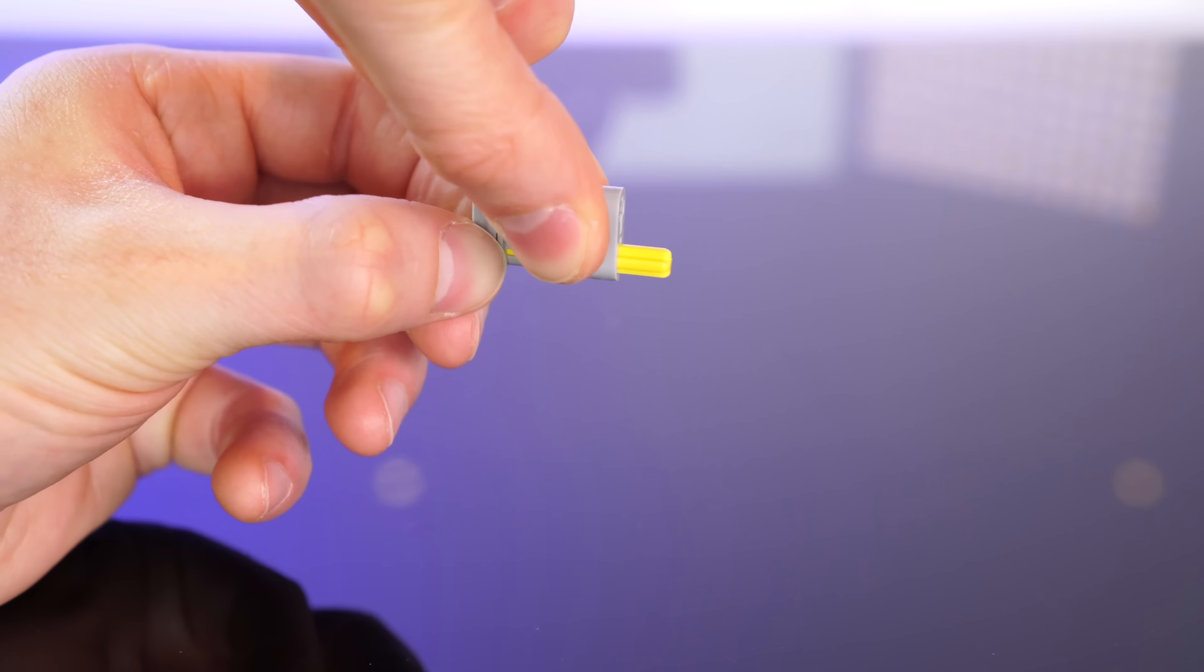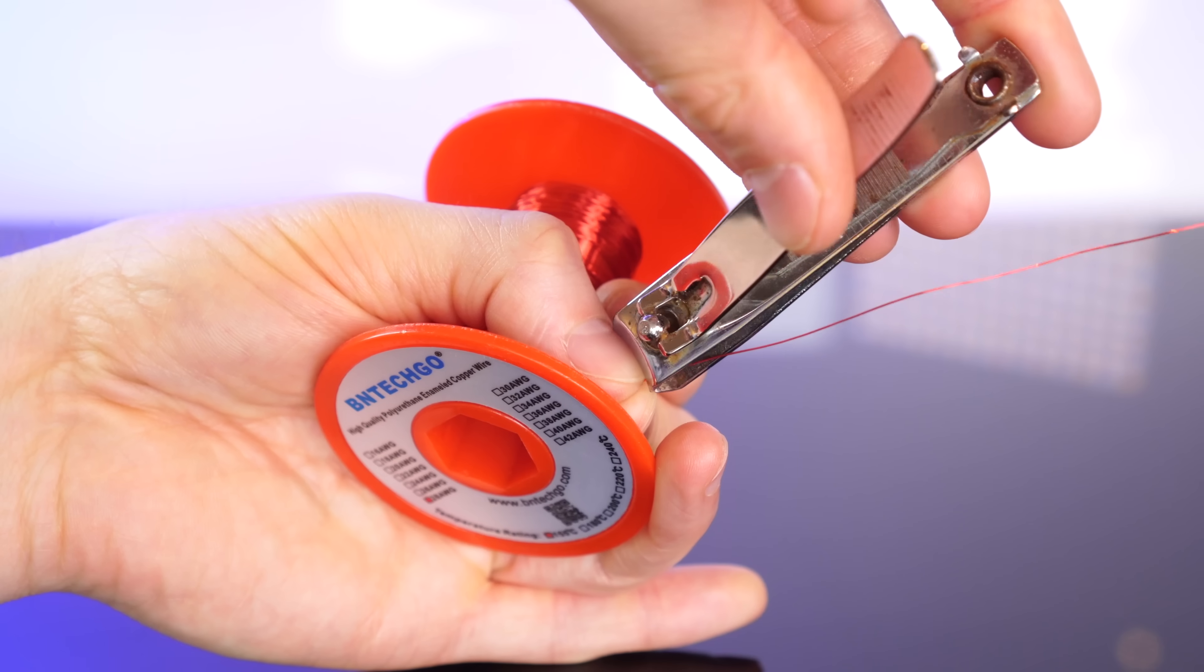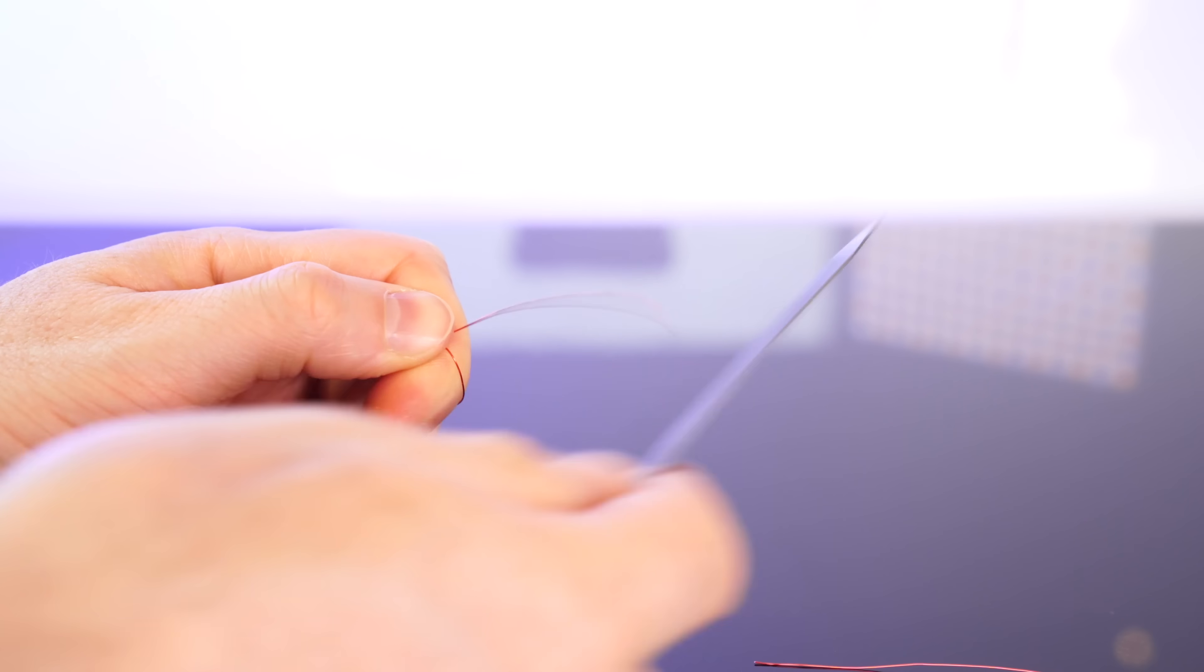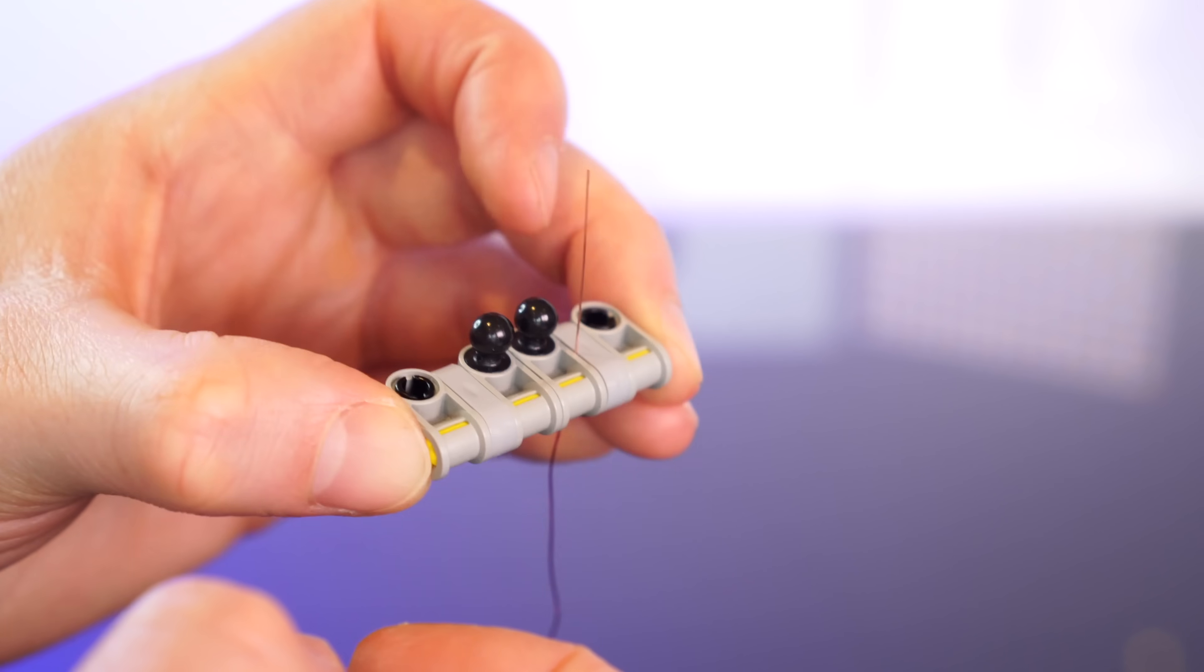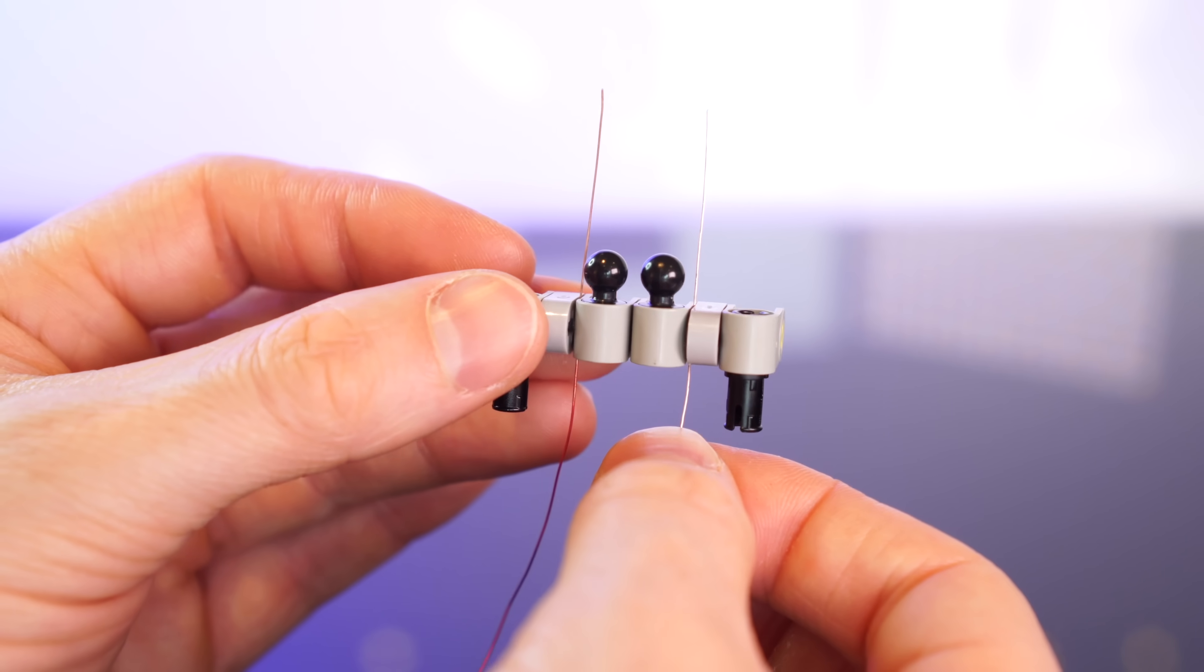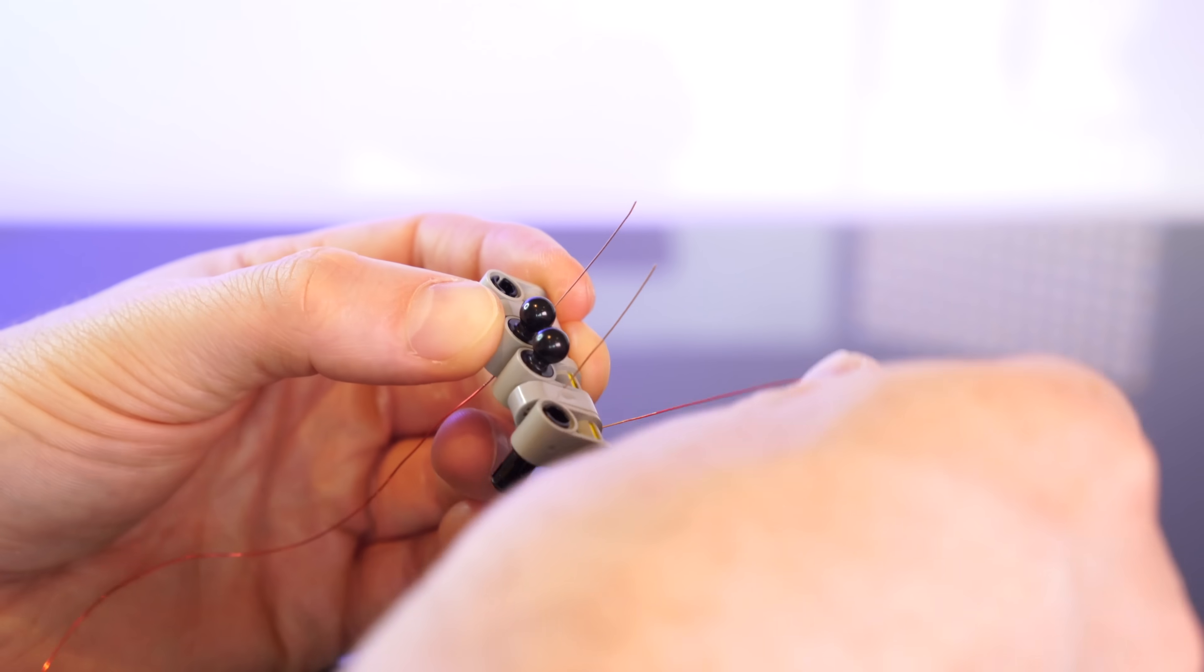Next then, we'll need to supply our rotor with power. This slightly thicker wire will be used to make some electrical brushes to transfer power to the rotor. Once again, we'll need to strip the insulation. And I'm going to sandwich these two wires between these pieces here.